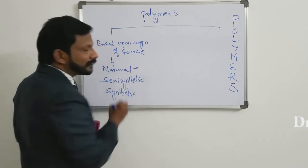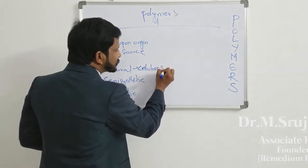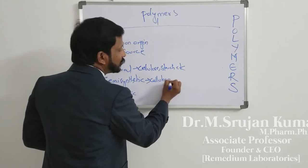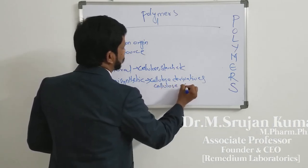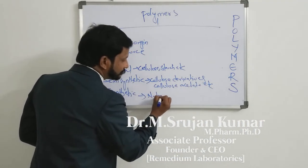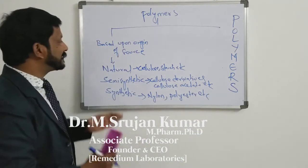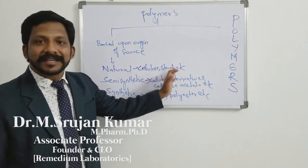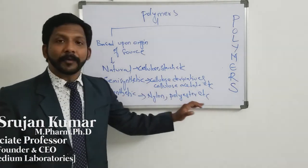What are the examples for polymers originated from natural source? Cellulose, starch, etc. Semi-synthetic examples are cellulose derivatives, such as cellulose acetate, etc. Examples for synthetic polymers are nylon, polyesters, etc.